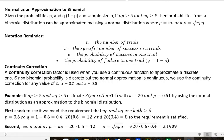Given the probabilities p and q, where q is 1 minus p, and sample size n, if np is greater than 5 and nq is greater than or equal to 5, then probabilities from a binomial distribution can be approximated by using a normal distribution where the mean equals np and the standard deviation equals the square root of npq.